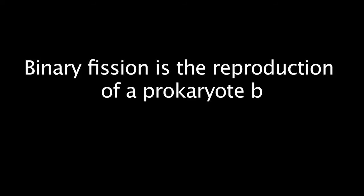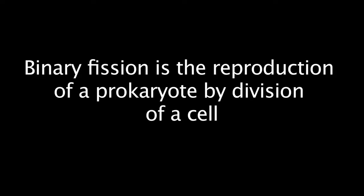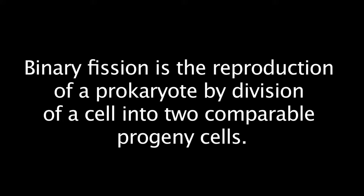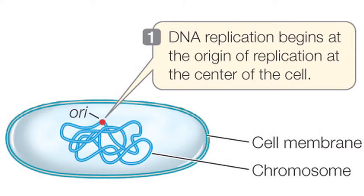Binary fission is the reproduction of a prokaryote by division of a cell into two comparable progeny cells. Binary fission begins with DNA replication at the origin of replication, or ORI, at the center of the cell.